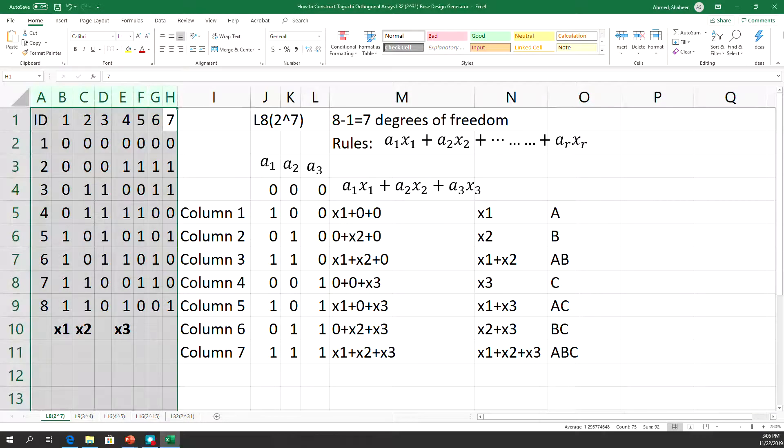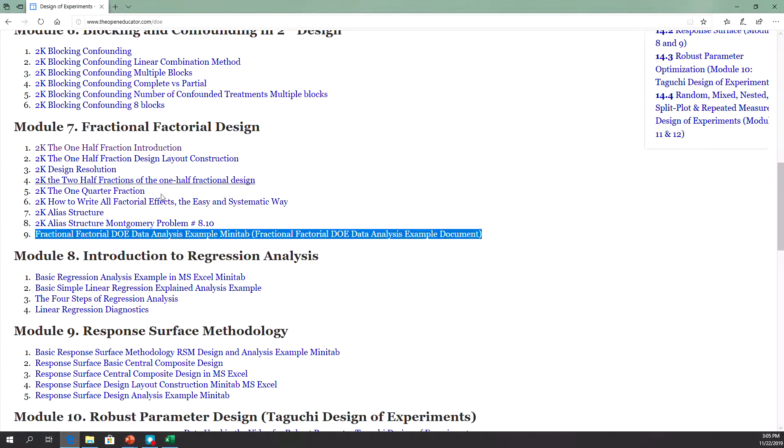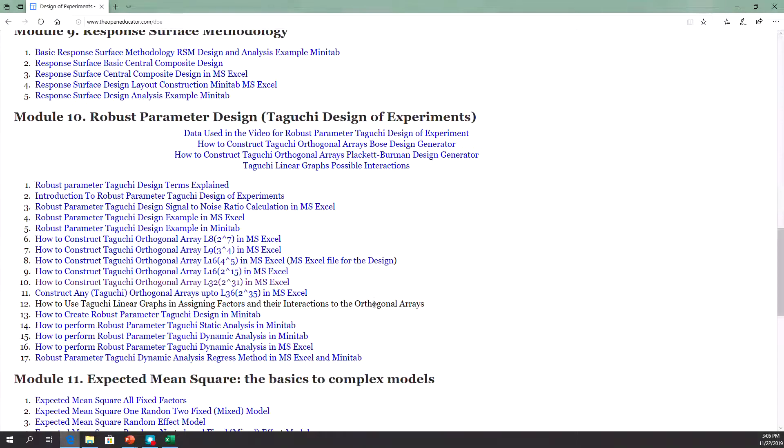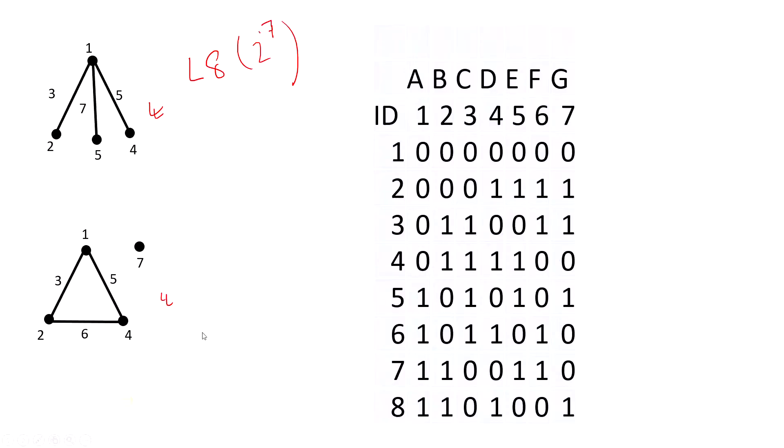To understand how to create this design, you can see the design in Excel here on OpenEducator.com. Check this video on how to create that. In this video, I'll talk about the connection between the linear graphs and this design. In Taguchi design, you can go up to test seven variables using only eight experiments.